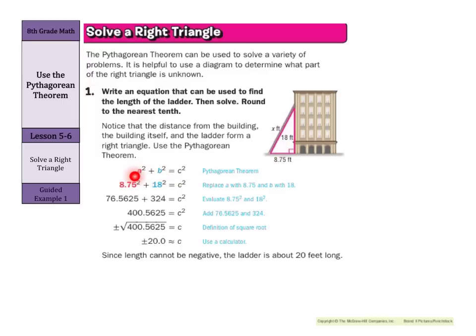And so this time we do have A squared plus B squared equals C squared, and we know our A and B. And you can see how they solved and took the square root and approximated. And again, since the length can't be negative, the ladder is about 20 feet long.